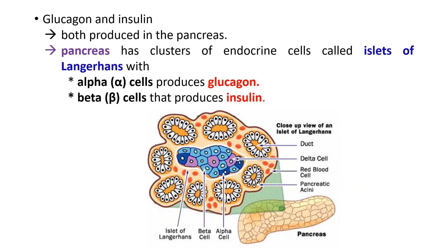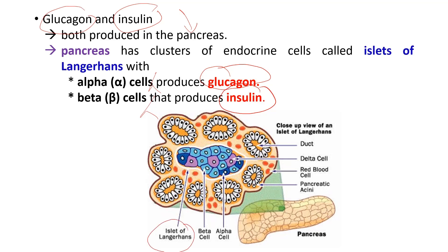Both glucagon and insulin are produced in the pancreas. The cells that produce glucagon are the alpha cells of the islets of Langerhans, while the cells that produce insulin are called the beta cells of the islets of Langerhans. These alpha and beta cells are the cells actually involved in the production of insulin and glucagon.